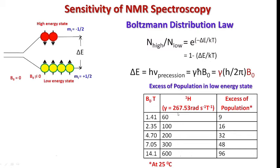So here, some of the values are given for proton NMR which is having gyromagnetic ratio 267.53 radians per second per tesla at 25 degrees centigrade.